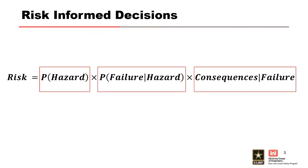That vertical line is the conditional probability symbol — it means 'given the thing that happened before in the equation.' So it's the probability of hazard times the probability of failure given that the hazard exists, times the consequences given the failure occurs. Those second and third terms are conditional probabilities.